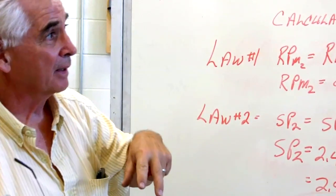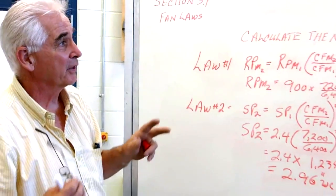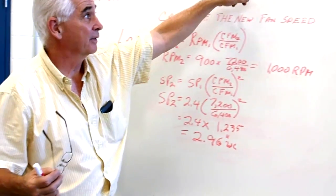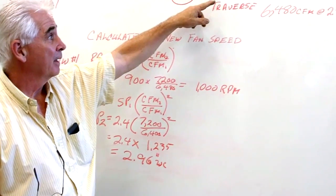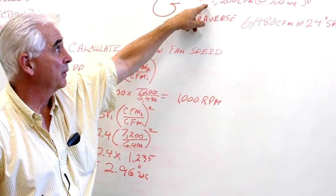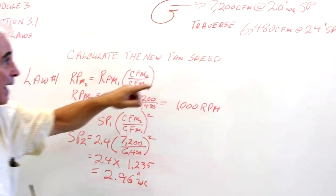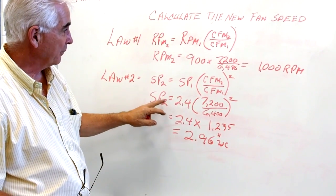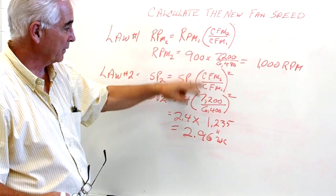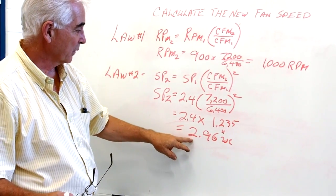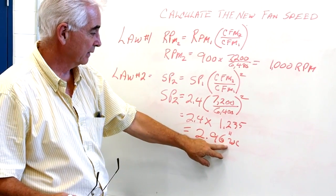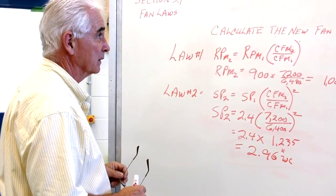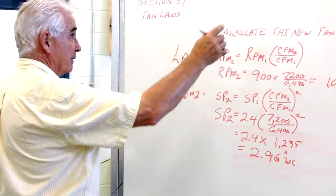Because the system is harder to push air through than the designer figured — it was designed for 2 inches — in order to get 7,200 CFM through the system, we have to change from 900 RPM up to 1,000 RPM, and when we do that, the static increases to 2.96 inches of water column.